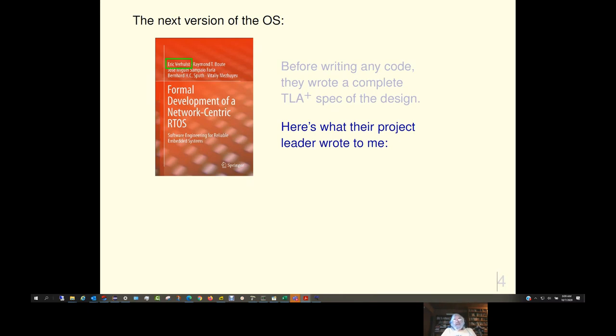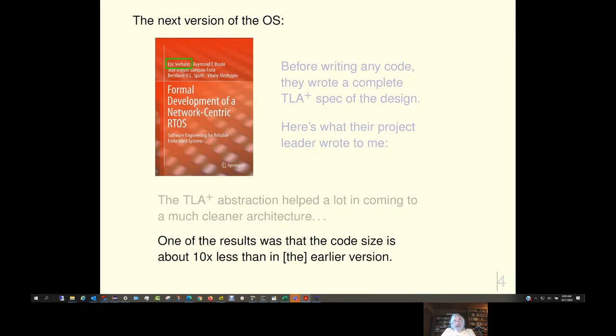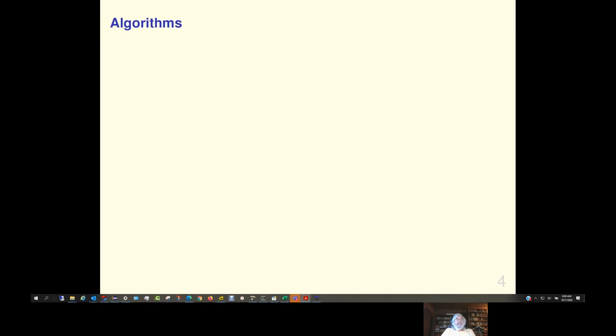And here's what their project leader wrote to me. He said that the TLA Plus abstraction helped a lot in coming to a much cleaner architecture. And one of the results was that the code size is 10 times less than in the earlier version. Actually, I recently looked at the book, and that said 5 to 10 times. So, I don't know which number to believe, but a pretty big reduction in code size.